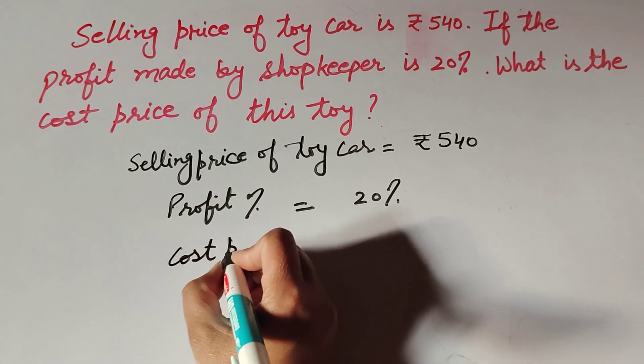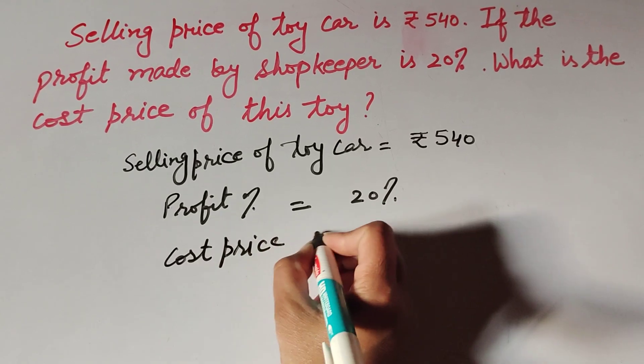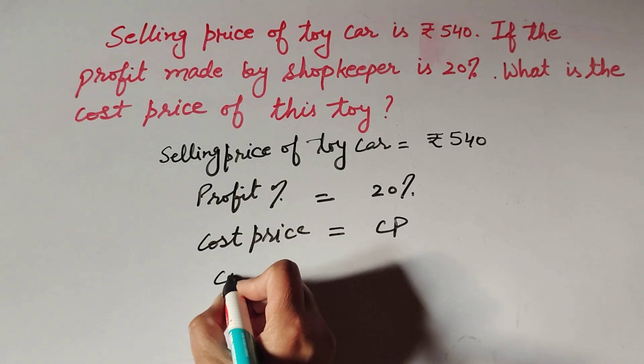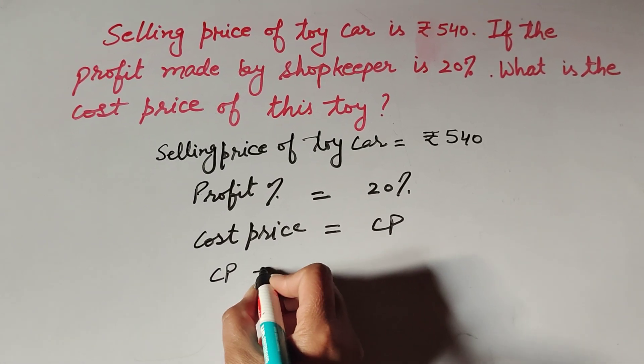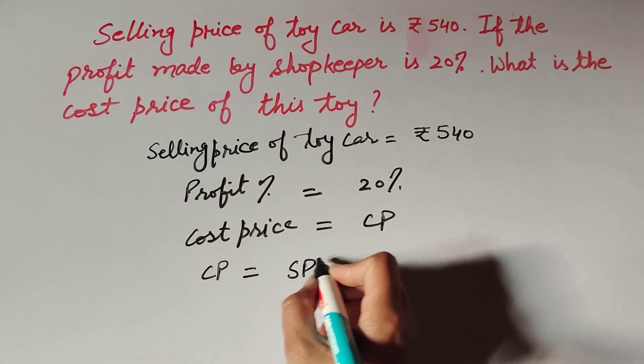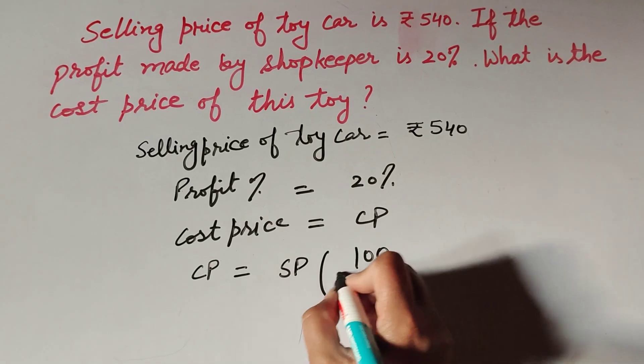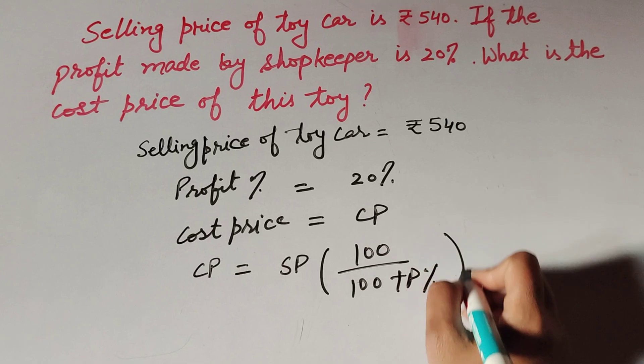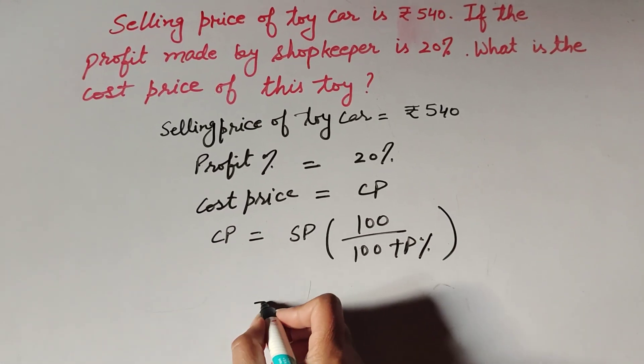Cost price, that we have to find, so we suppose it is CP. CP is the cost price. Cost price is equal to SP into 100 over 100 plus profit percent. So this is the formula that we use to find the cost price.